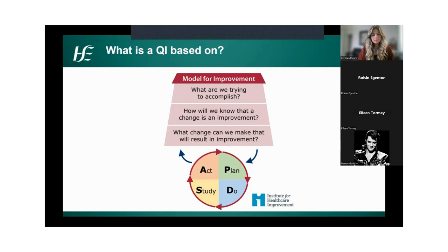The Model for Improvement is the framework we use to drive continuous improvement, and many other quality improvement methodologies use it as a basis. The model consists of two parts. First, three questions that help us define what we want to achieve, what ideas we think might make a difference, and what we'll measure to understand if the change is an improvement rather than just change for change's sake. The second part is the PDSA — Plan, Do, Study, Act cycle — which outlines the steps for actual testing of change ideas. The cyclical nature allows change to be refined through repeated cycles of testing and learning, providing the vehicle for continuous improvement.